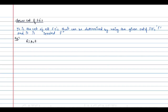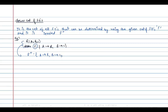Assume we have the relation R(A, B, C) and the given set of functional dependencies are A→B and B→C. Using these functional dependencies, we can find new functional dependencies such as A→C, AC→BC, AB→BC, and so on. All these additional functional dependencies are called the closure set of functional dependencies, denoted F+.